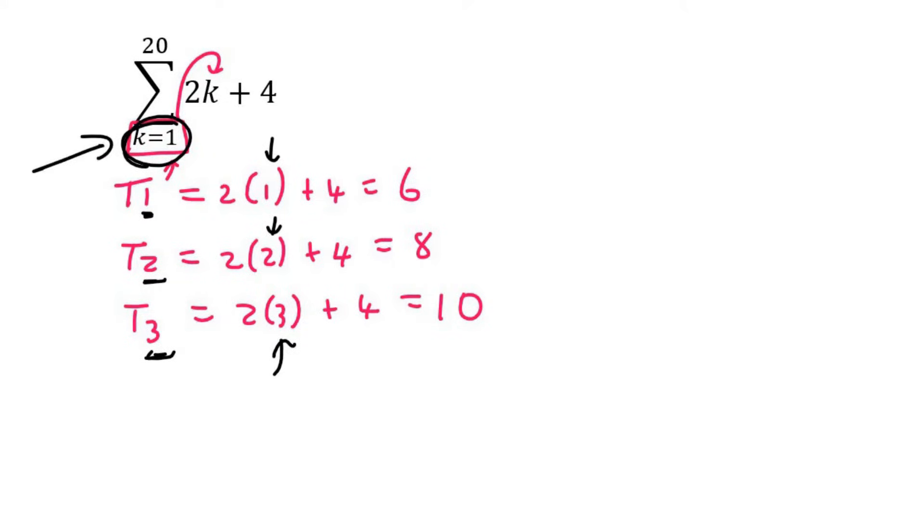Because sometimes this number at the bottom is not a 1, and we'll look at examples like that just now. Now, why did you say the first three terms? Because if you do the first three terms, you will be able to see what kind of pattern you have. You have 6, 8, and 10. That is arithmetic.